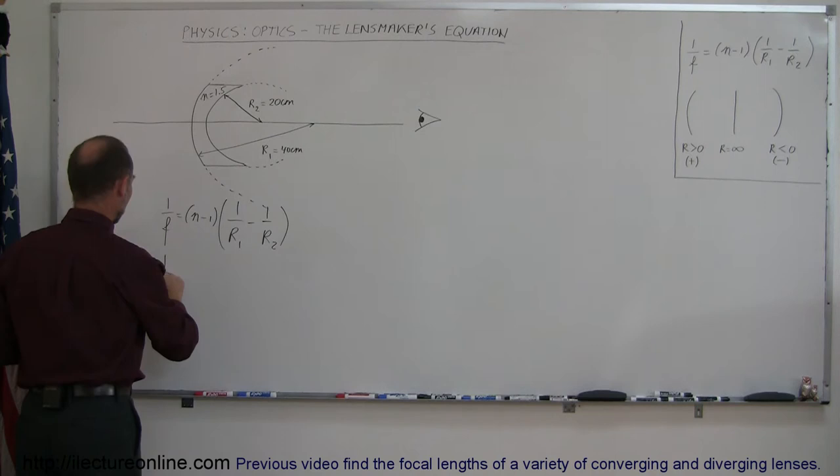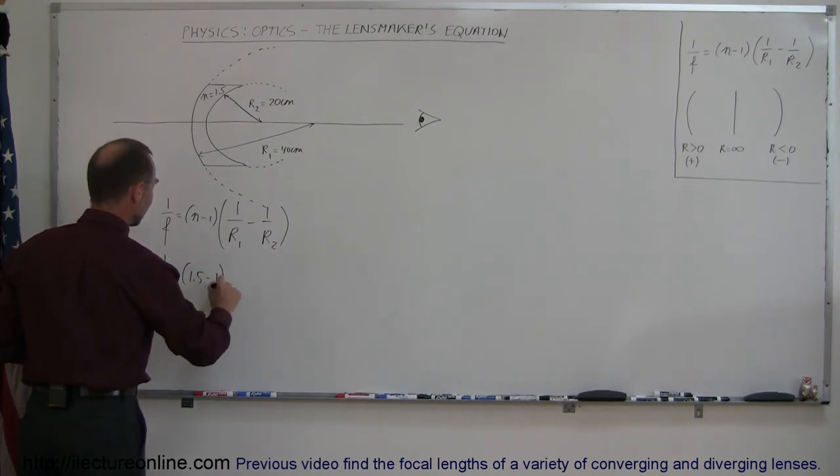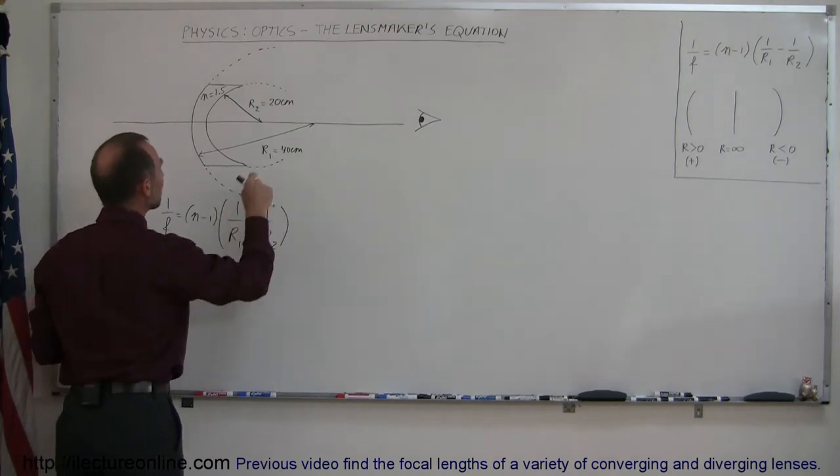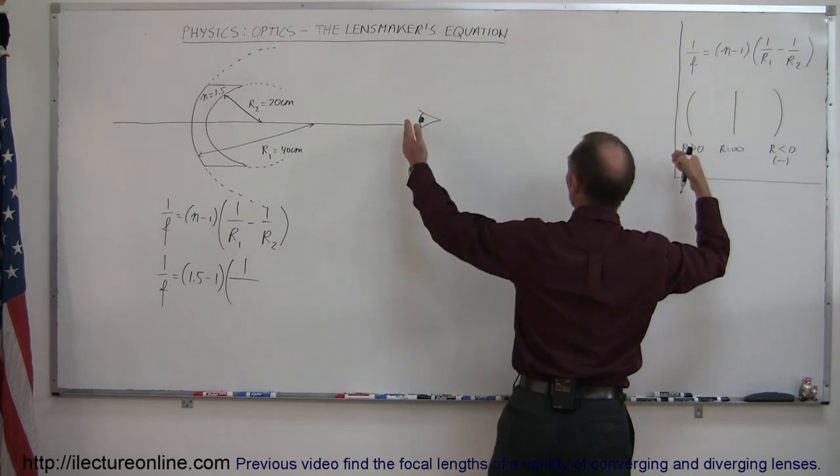And then let's plug in the numbers. 1 over f is equal to 1.5 minus 1 times 1 over the first radius, which is 40 centimeters. And since it is curved away from the observer, we call it a positive curvature.